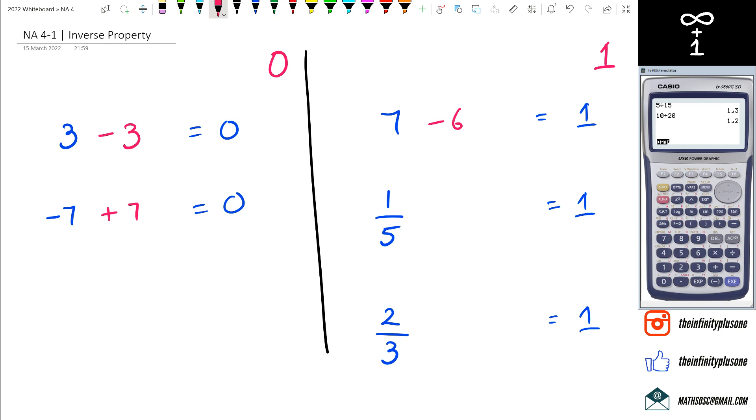This is where you need to understand that you can actually multiply by the number's reciprocal. What do I mean by that? I could actually multiply seven with one over seven, because then the numerator is seven, the denominator is seven—seven divided by seven is one. Likewise, when I have one over five, I multiply it by its reciprocal.